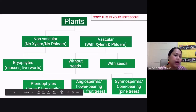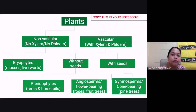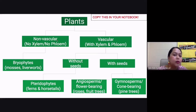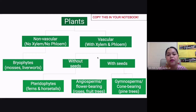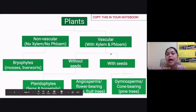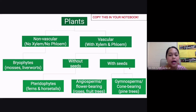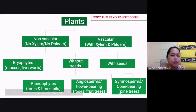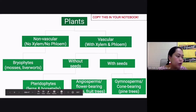To summarize the graphic organizer: plants without vascular tissue are non-vascular plants; those with vascular tissue are vascular plants. Under non-vascular plants are bryophytes — mosses and liverworts. Under vascular plants, those without seeds are pteridophytes, and those with seeds are either angiosperms (flower-bearing) or gymnosperms (cone-bearing).